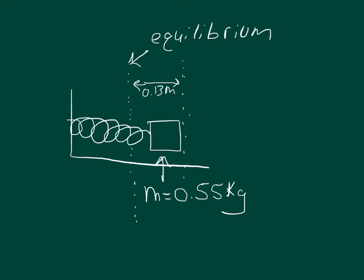Question number one: a block of mass 0.55 kilograms is attached to a spring with a force constant of 109 newton meters. It is free to move on a frictionless horizontal surface as in the figure below.